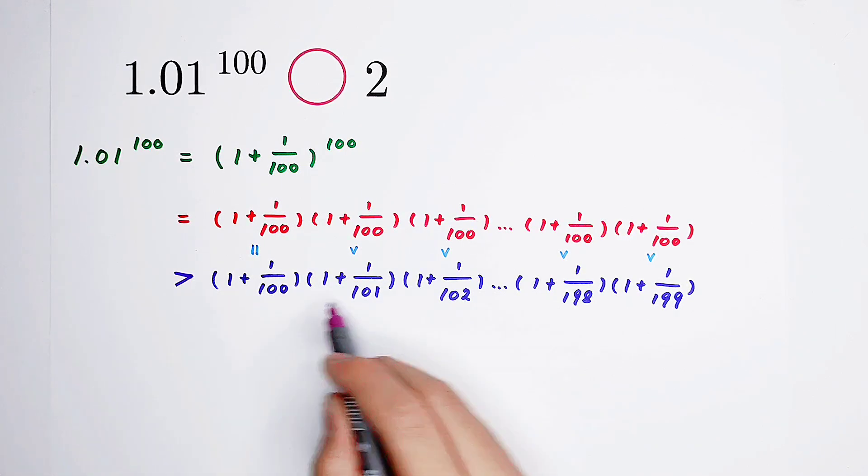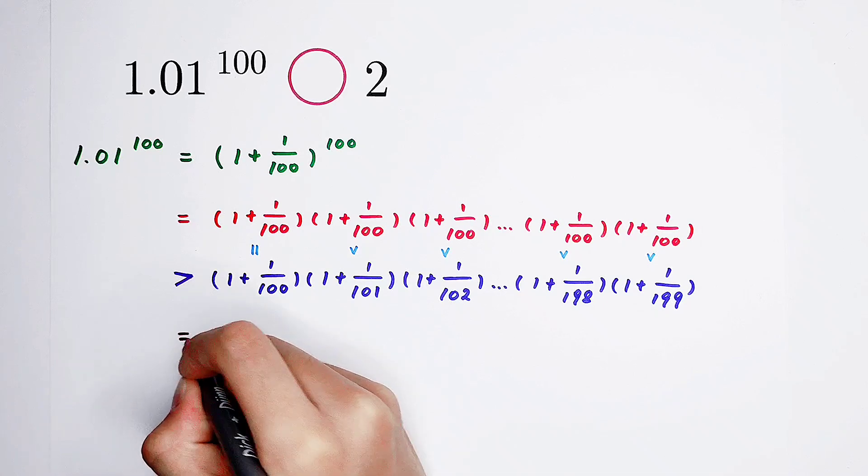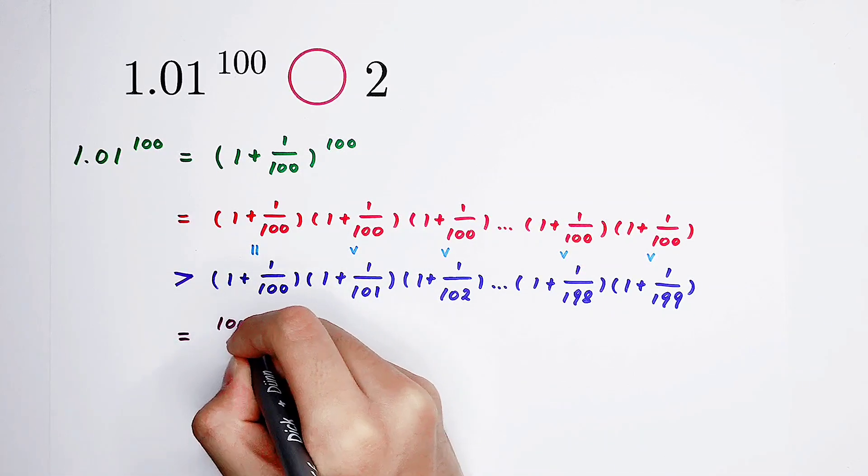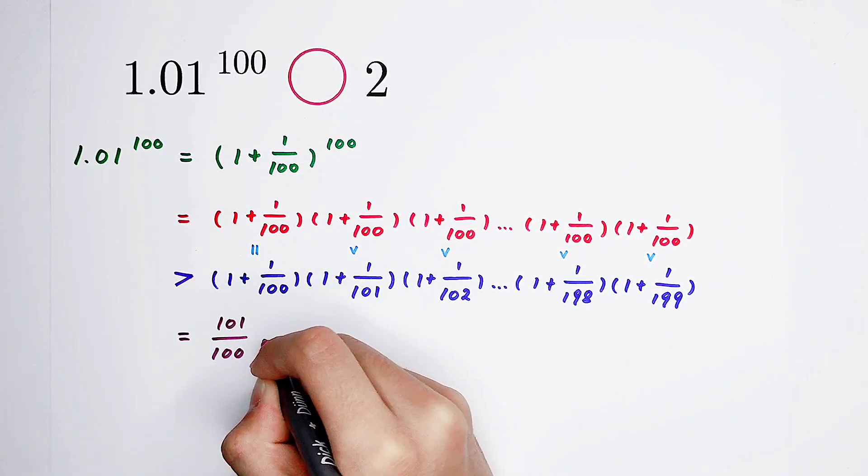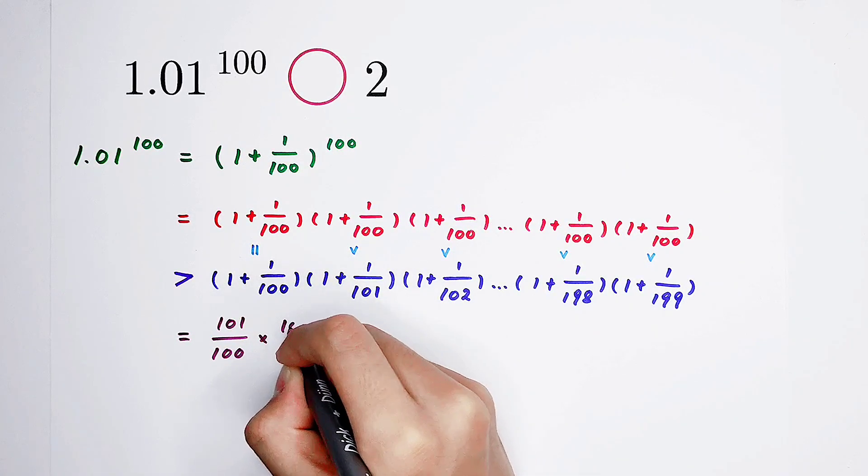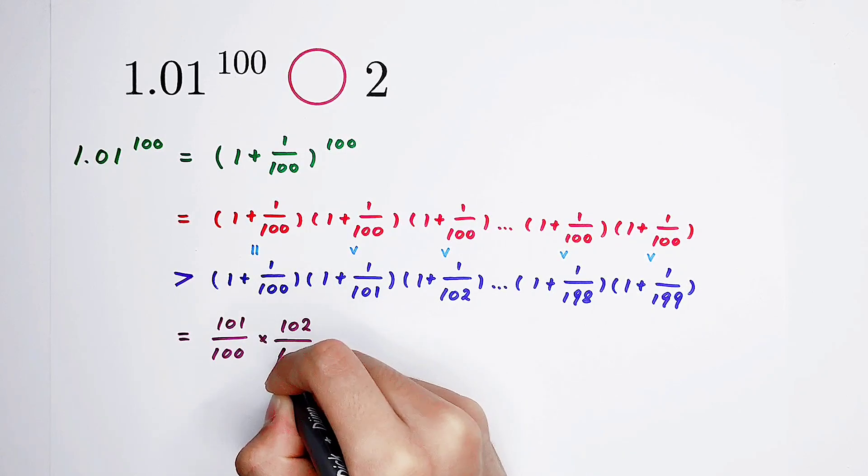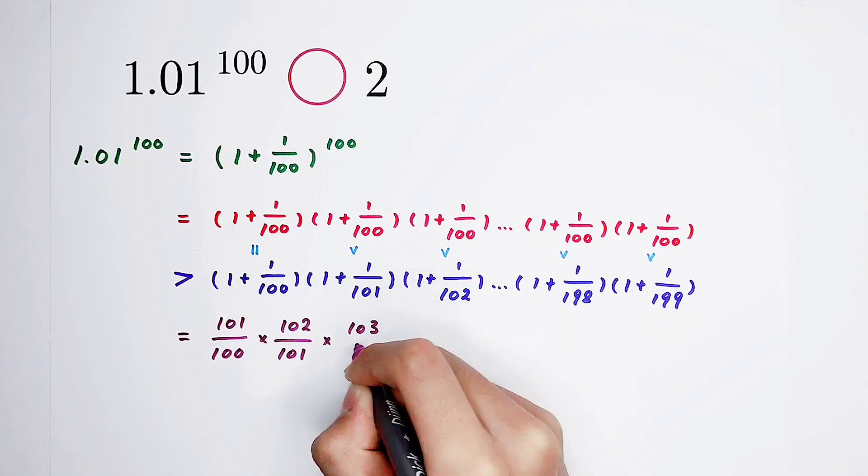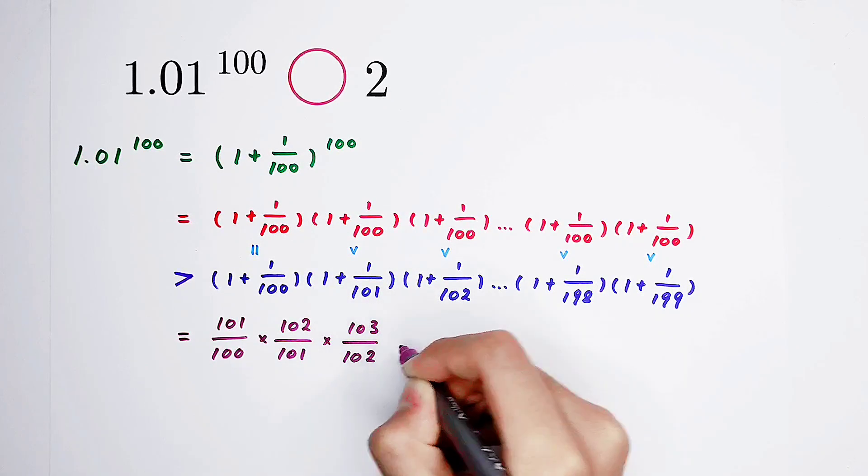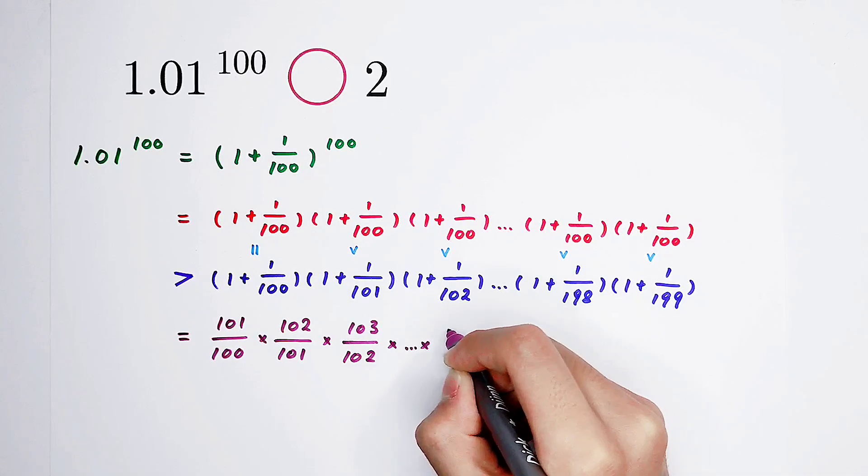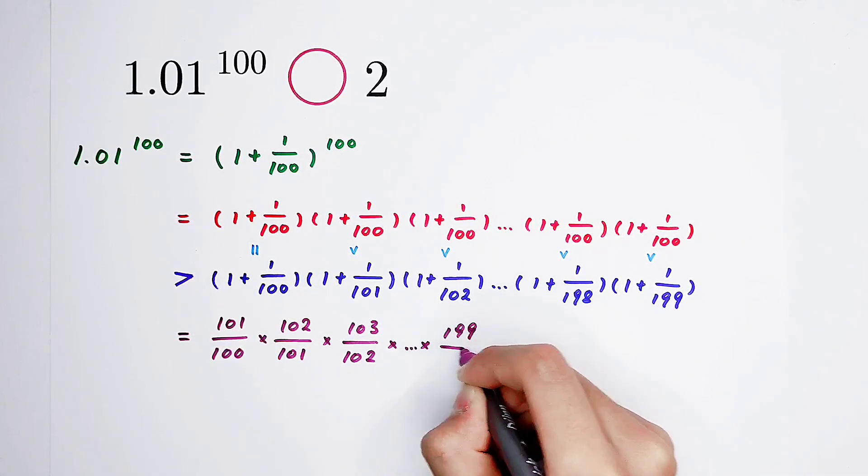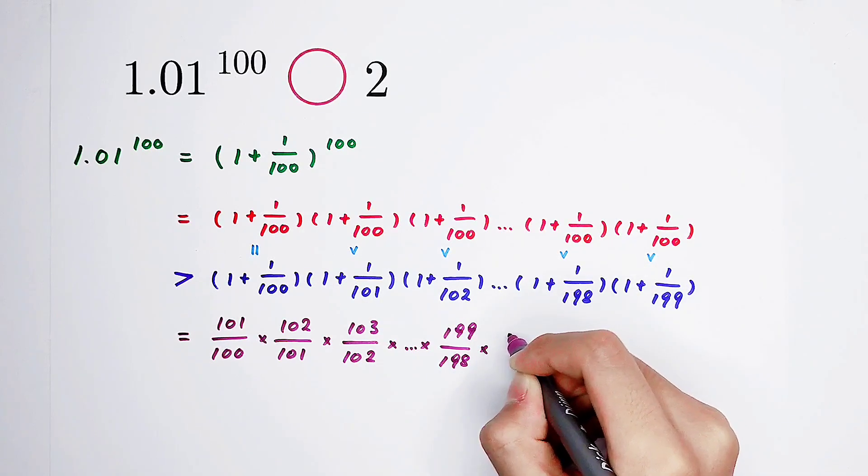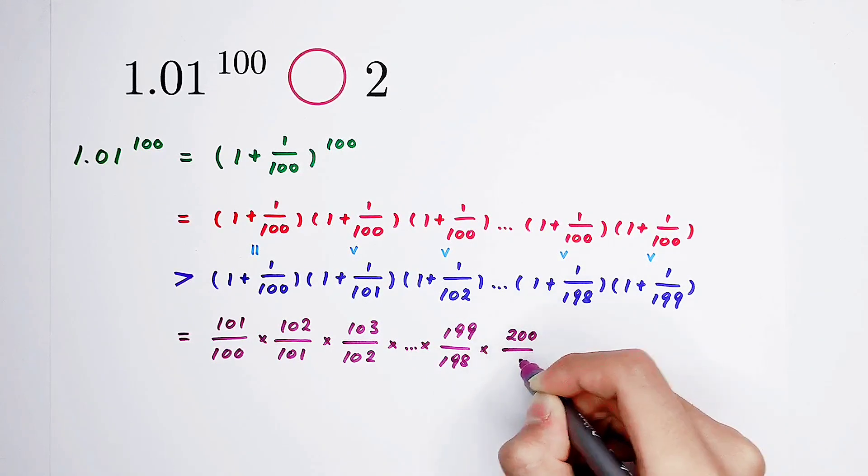Now our work is to evaluate. 1 plus 1 over 100. It is 101 over 100. Times, here is 102 over 101. Times 103 over 102. Until here, 199 over 198. And the last factor is 200 over 199.